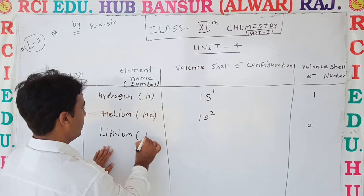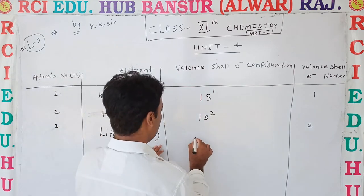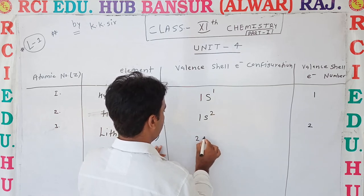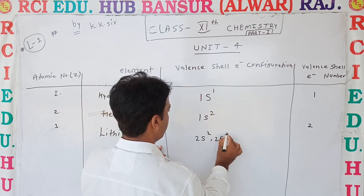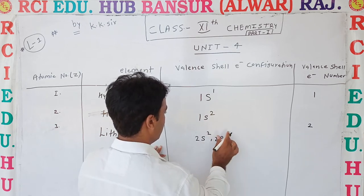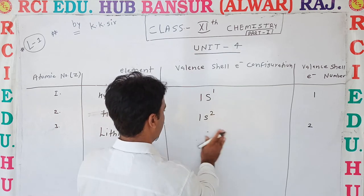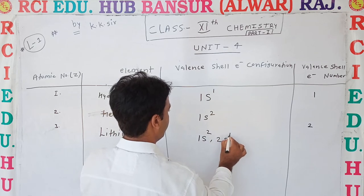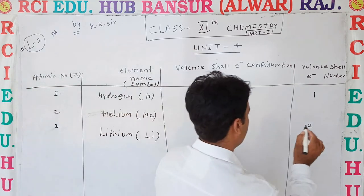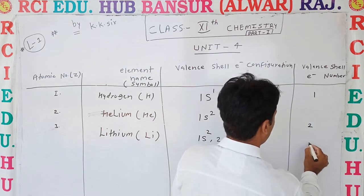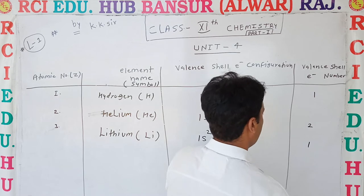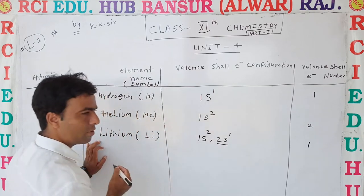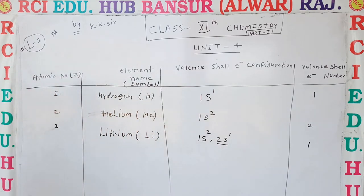Atomic number 3 is Lithium, symbol Li. Its valence cell electronic configuration is 2s1, and the valence cell electron number is 1. Note that the valence cell electron refers to the outermost electrons.